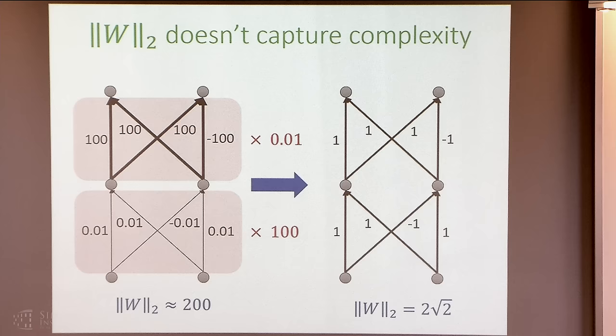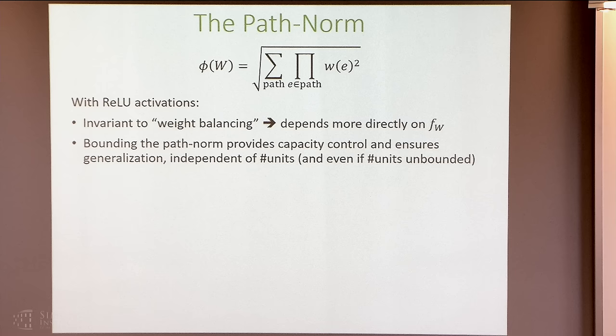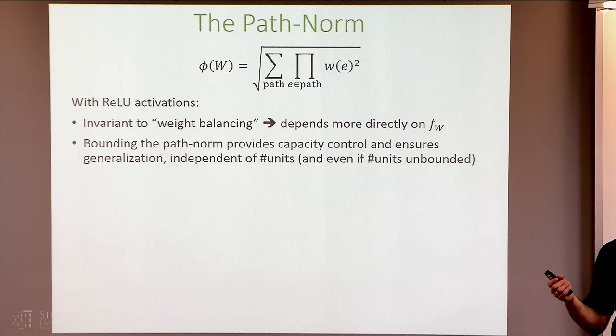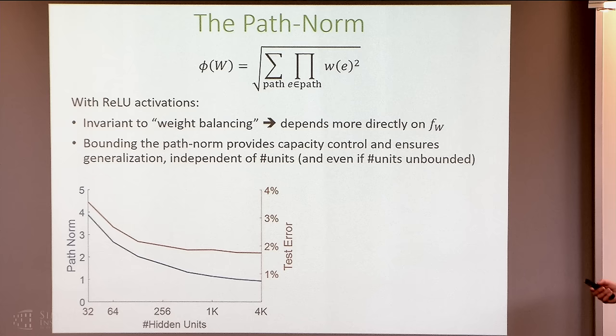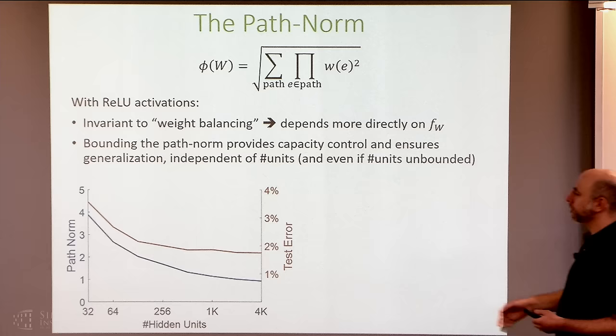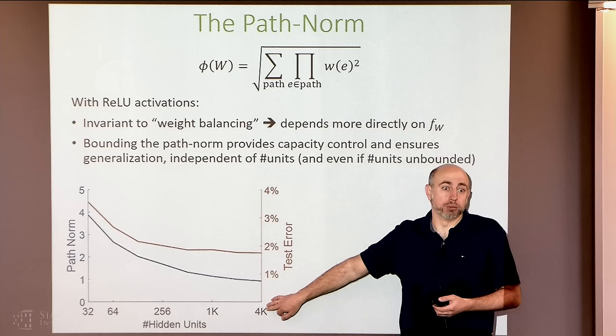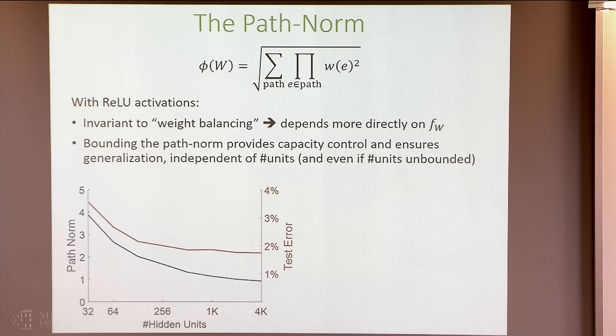If we do the same plot but instead of the L2 norm plot the path norm, we do get a nice decrease. So we start to get an understanding of what might be going on: the improved generalization is because we're actually fitting a simpler model — simpler not in terms of rank or number of units, but in terms of smaller path norm. The path norm is inspired by ways of representing the trace norm. The important point is which norm on the weights you're using — whether you're computing the norm of the weights or the norm of the function being computed.